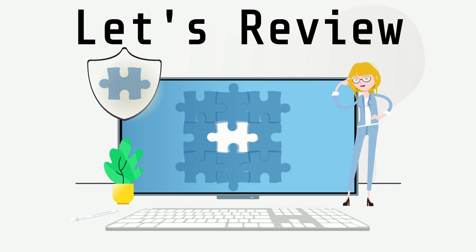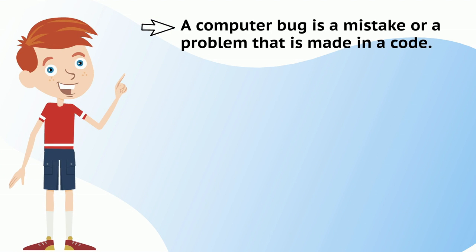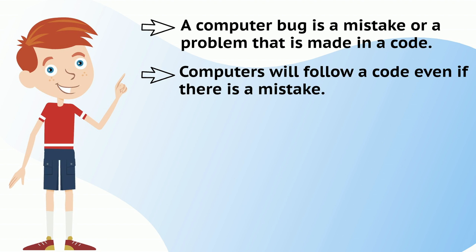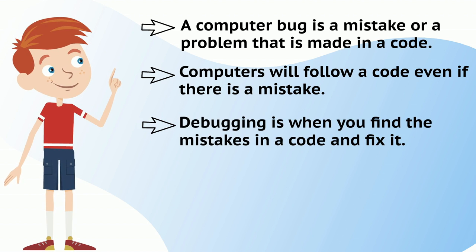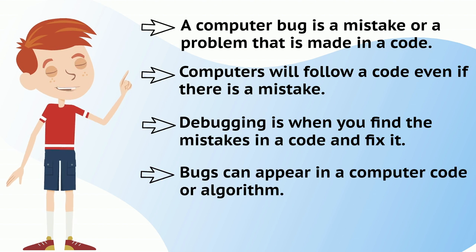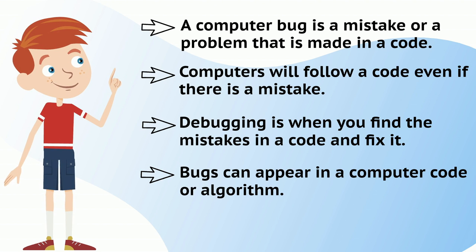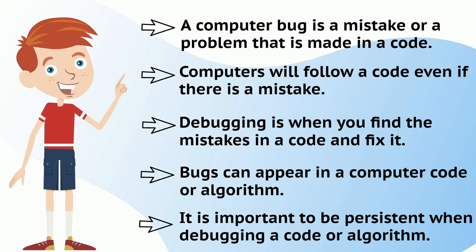Let's review what we have learned. A computer bug is a mistake or a problem that is made in a code. Computers will follow code even if there is a mistake. Debugging is when you find the mistakes in a code and fix it. Bugs can appear in a computer code or algorithm. It is important to be persistent when debugging a code or algorithm.